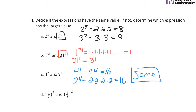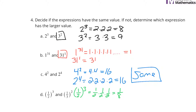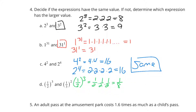Lastly, what about 1 half to the 3rd? This is 1 half times 1 half times 1 half, which is 1 over 8, so 1 eighth. And 1 third squared is 1 third times 1 third, which is 1 ninth. So they're not the same — but be careful! 1 ninth is not bigger than 1 eighth; 1 eighth is bigger than 1 ninth. So 1 half to the 3rd power actually has the larger value.